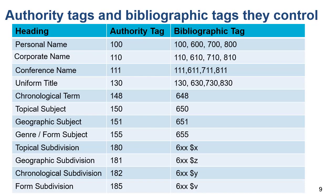This table shows the type of heading in the first column, the authority tag for the authorized form of the heading in the second column, and the bibliographic tags which the authority tag controls in the last column. For example, a 100 tag in an authority record for a personal name controls a 100 personal name tag in a bibliographic record, in addition to the 600 field for a name used as a subject, and the 700 field for a name used as an added entry. If you're using OCLC Connection or Record Manager, the headings are controlled in a bibliographic record when they are linked to their respective authority records.